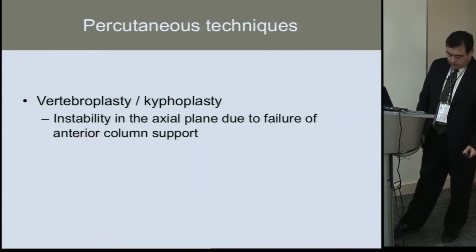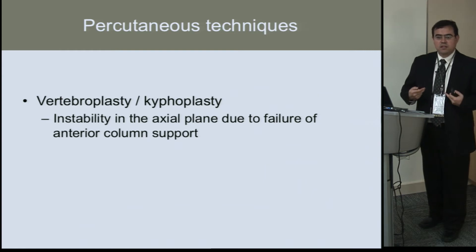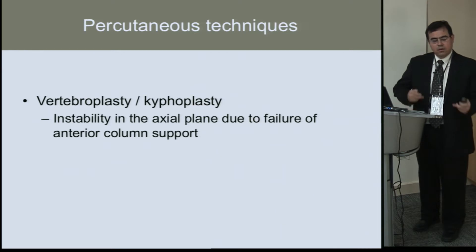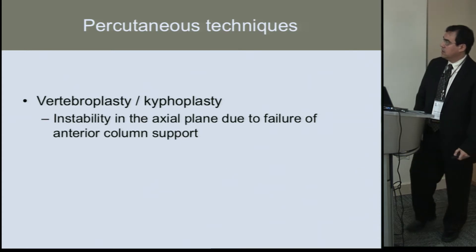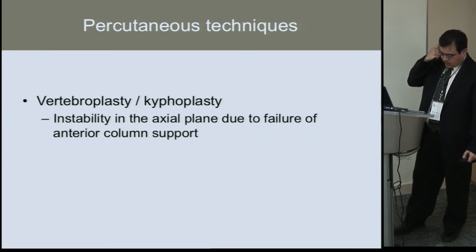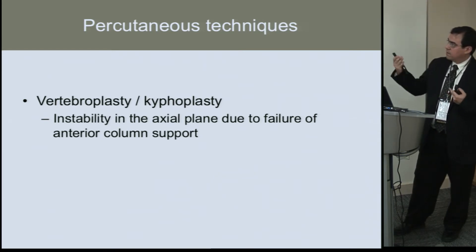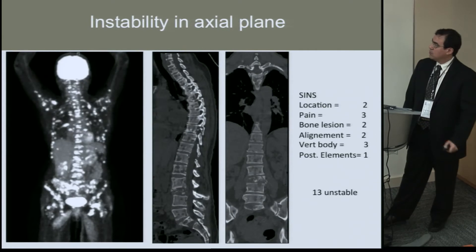Once we decide that the patient has an unstable spine, how can we fix that? We can perform open surgery, but there are other less aggressive interventions. For someone who needs chemotherapy and we can't wait long, cement augmentation is a very good alternative. Percutaneous stabilization is another good option.